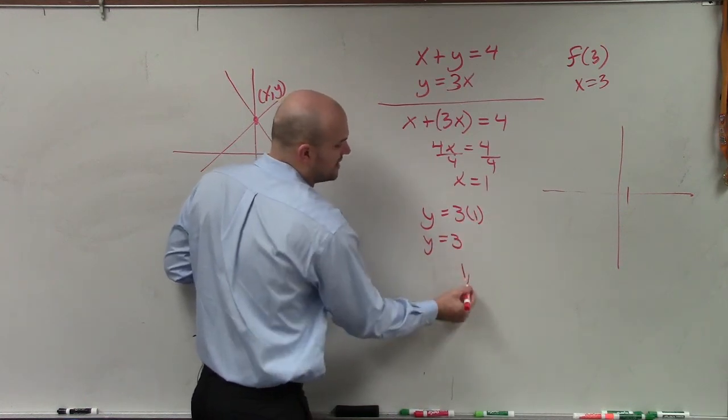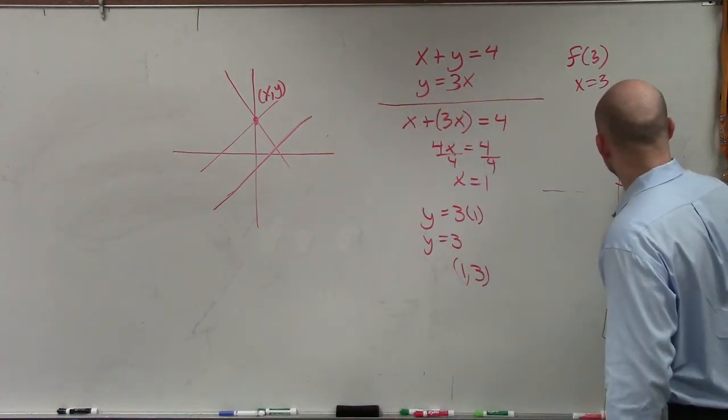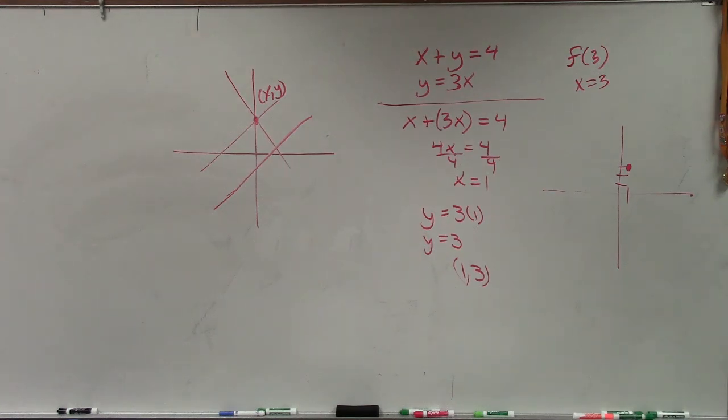So the x-coordinate where these two graphs intersect is at 1, 3. And that is going to be what we call your solution.